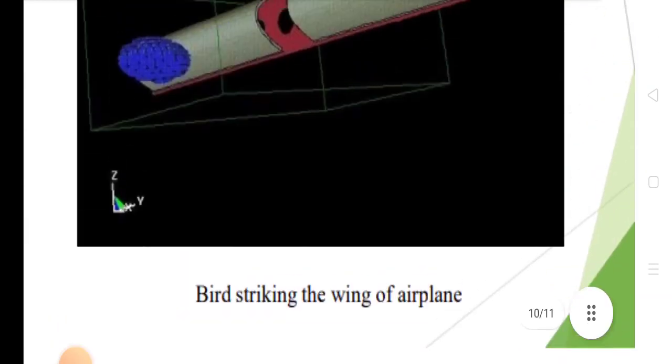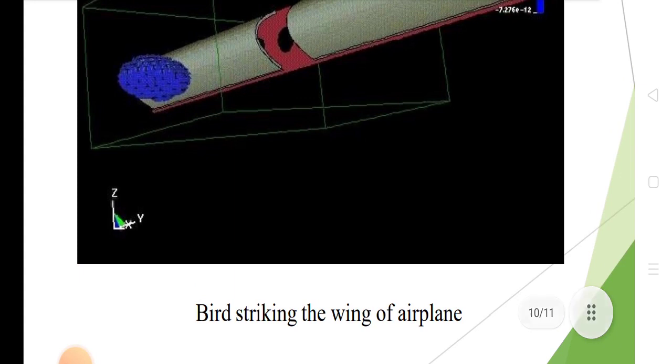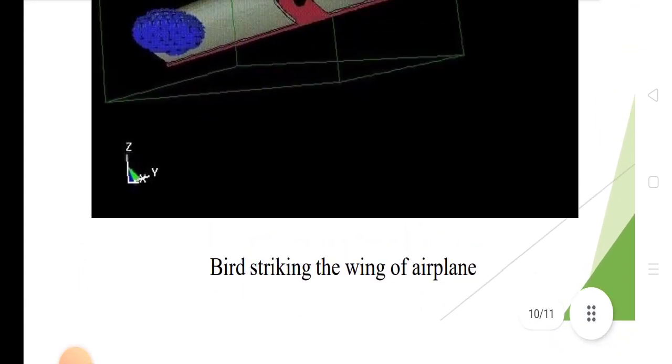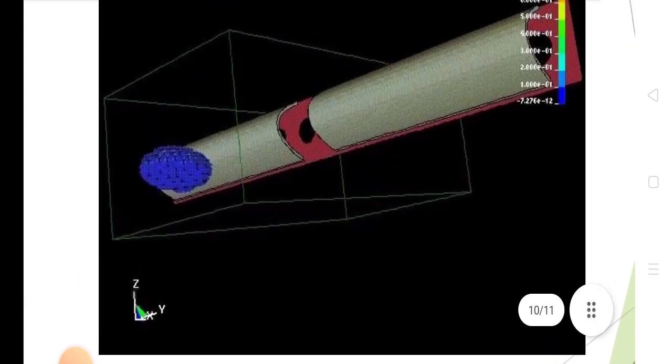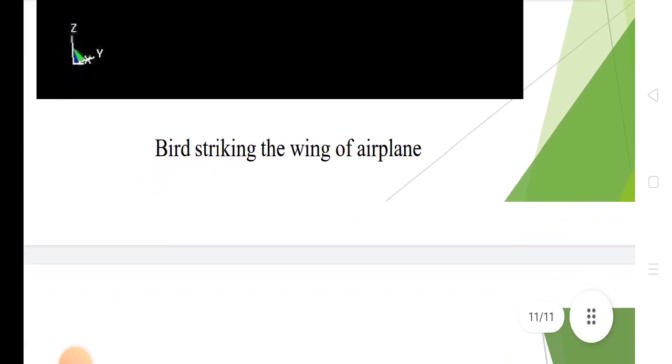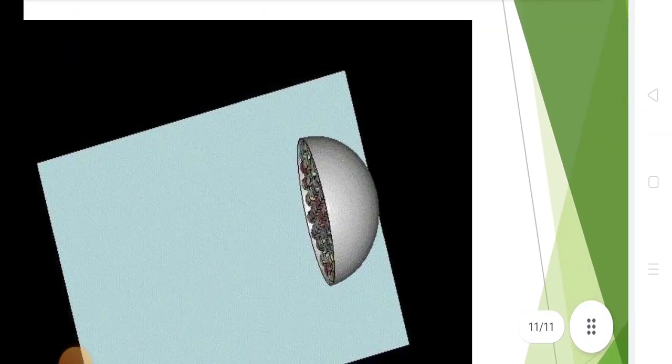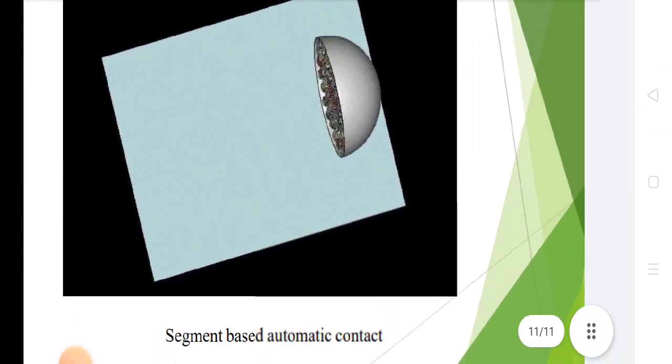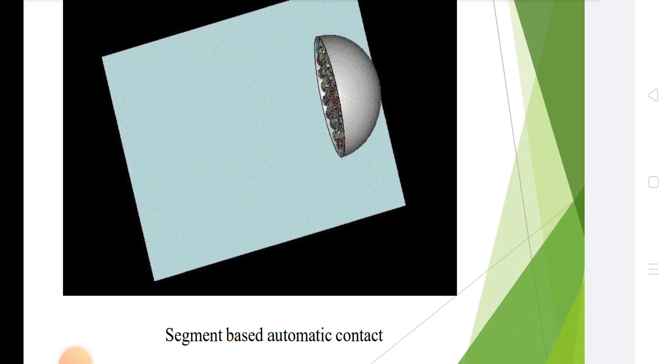This is a bird striking the wing of an airplane. This is the diagram of segment-based automatic contact. This is the segment-based contact.